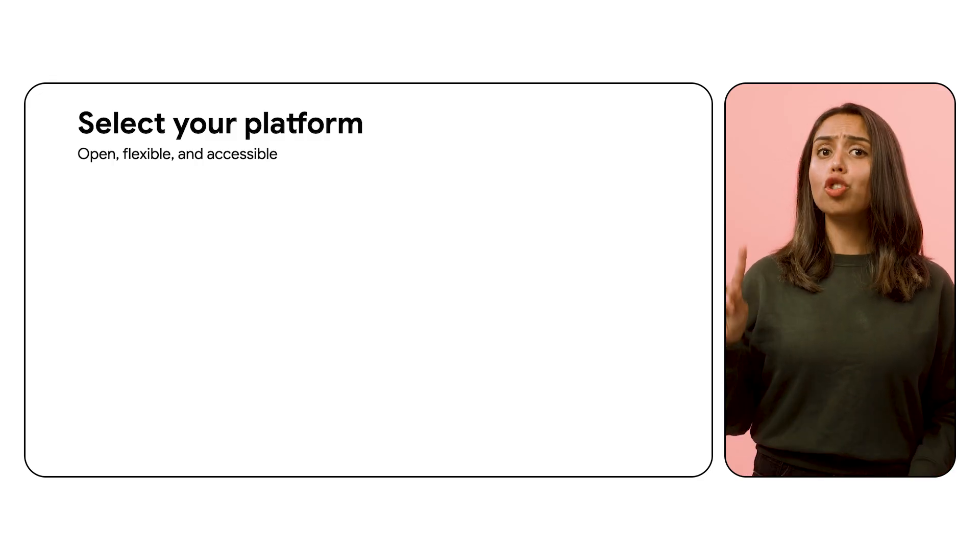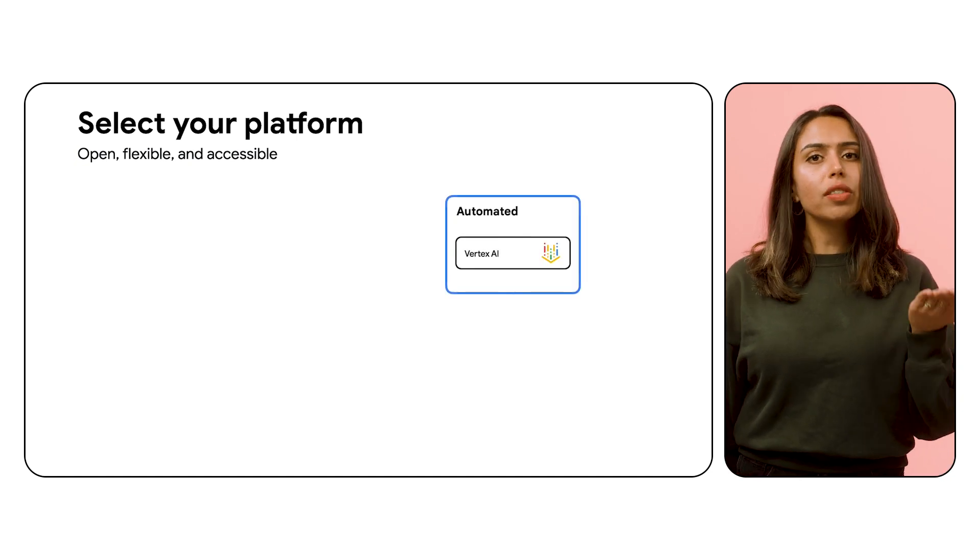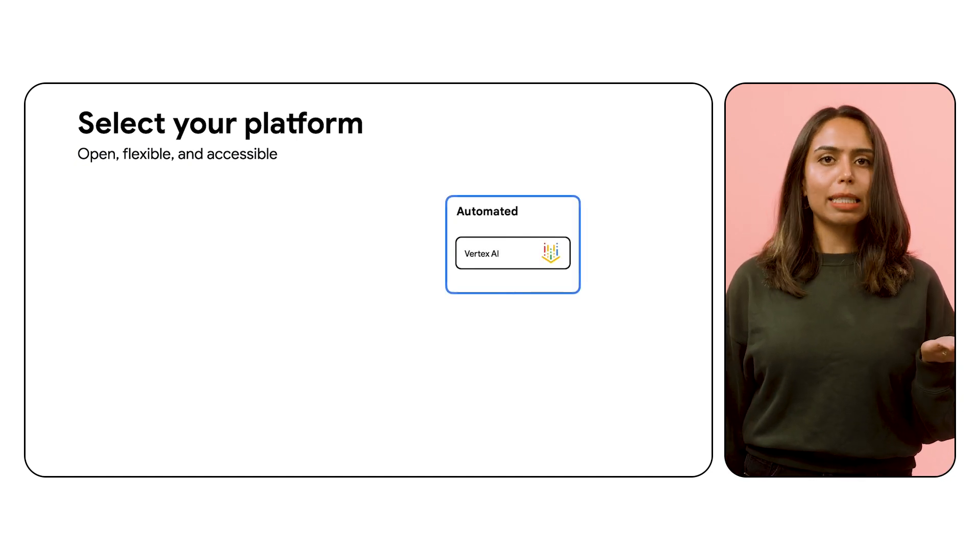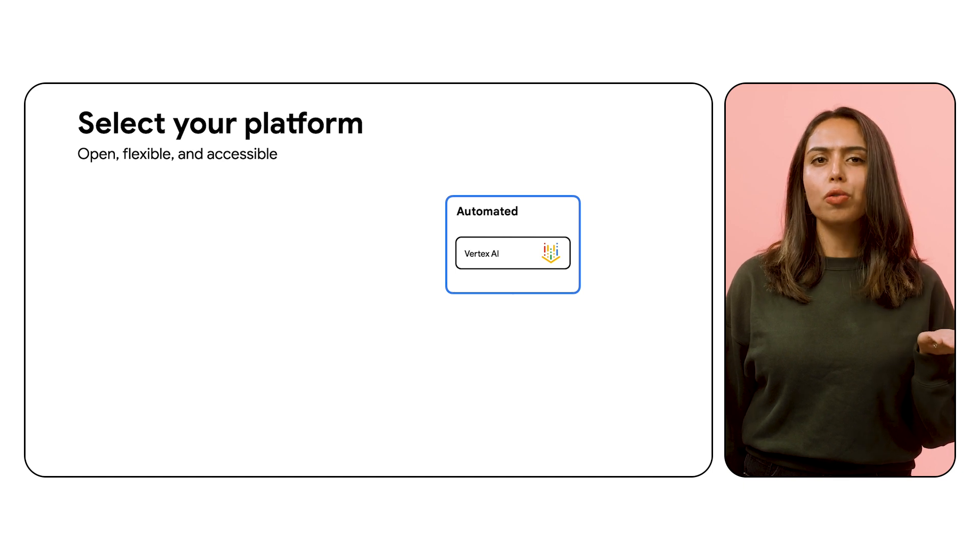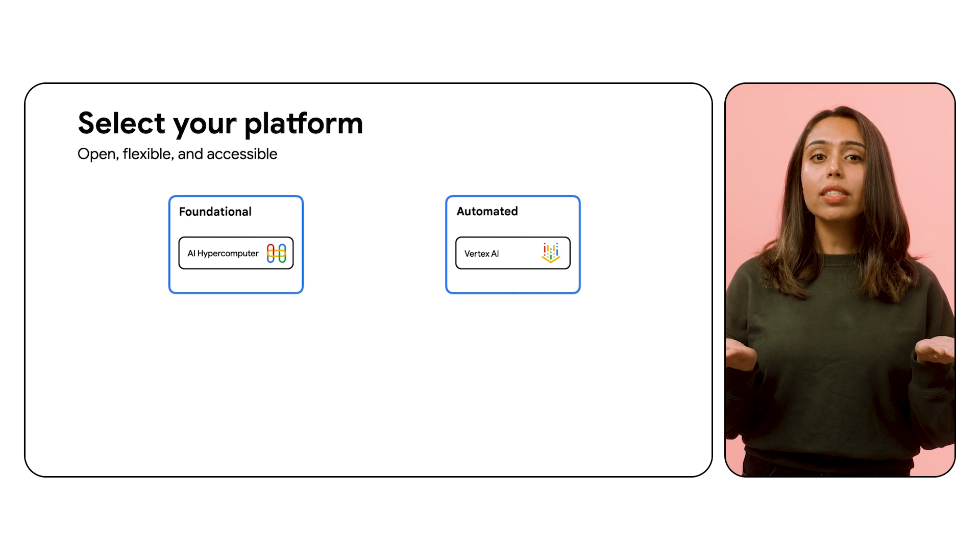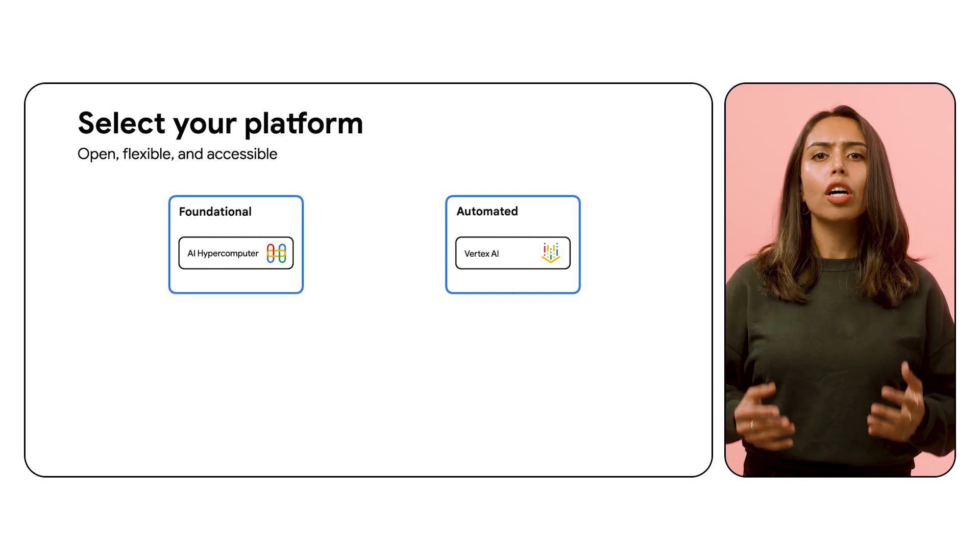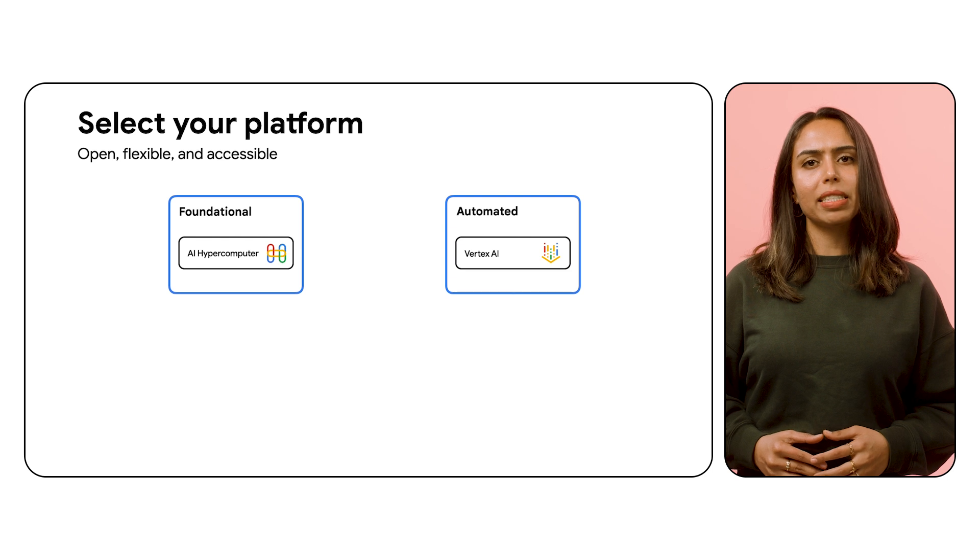For platforms, we explore two powerful options. On one hand, there is Vertex AI, which is ideal for rapid development and deployment. This is your go-to for efficiency and speed. On the other hand, we have AI hypercomputer, which is designed for organizations needing custom AI models. Choose this for maximum flexibility and control.